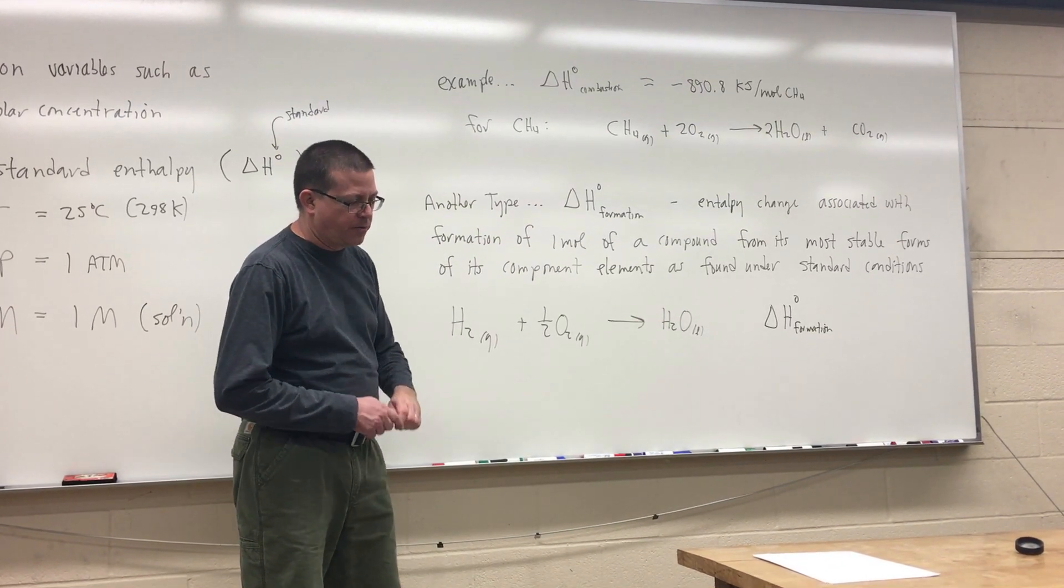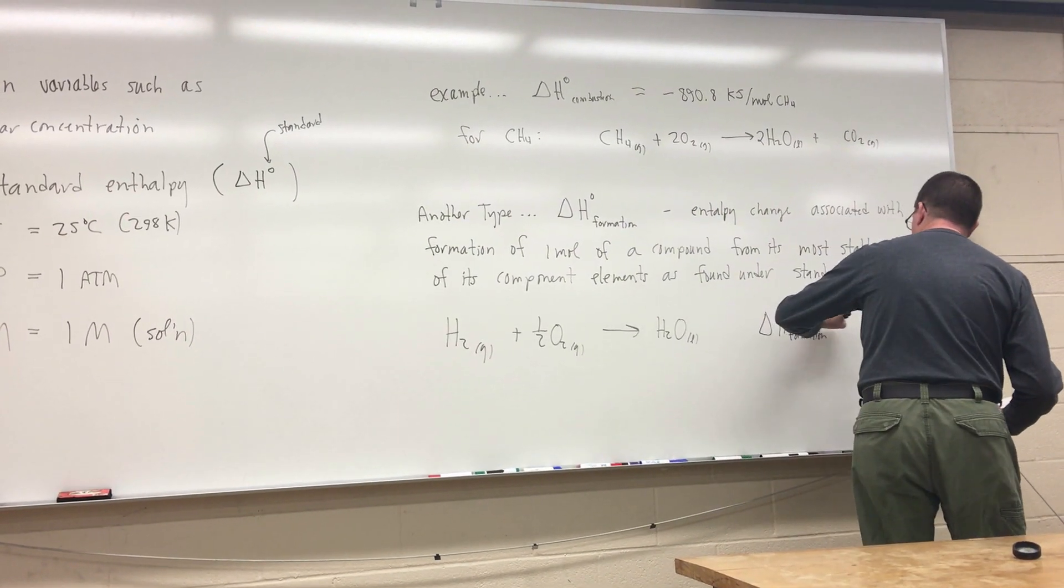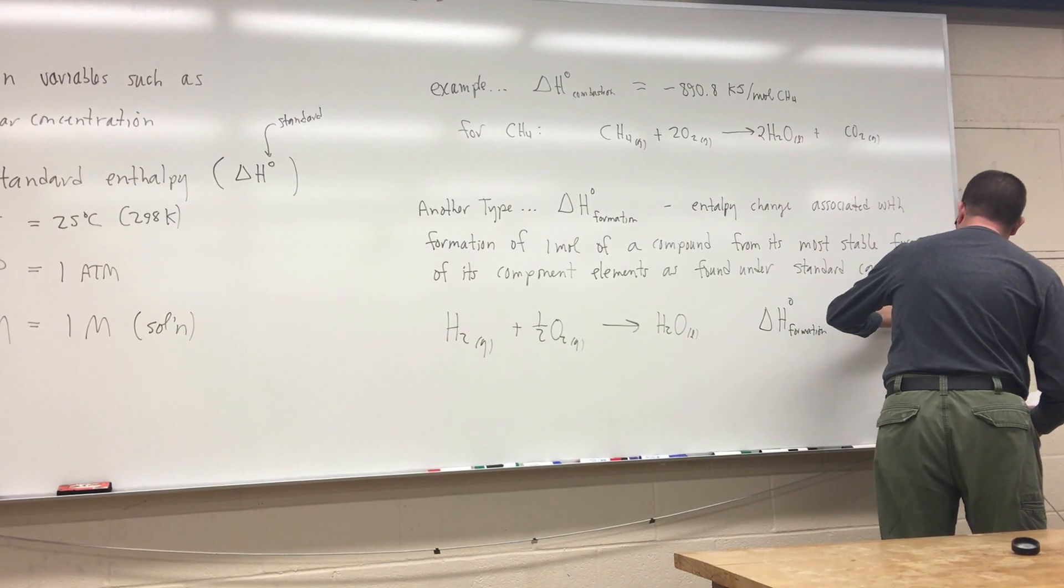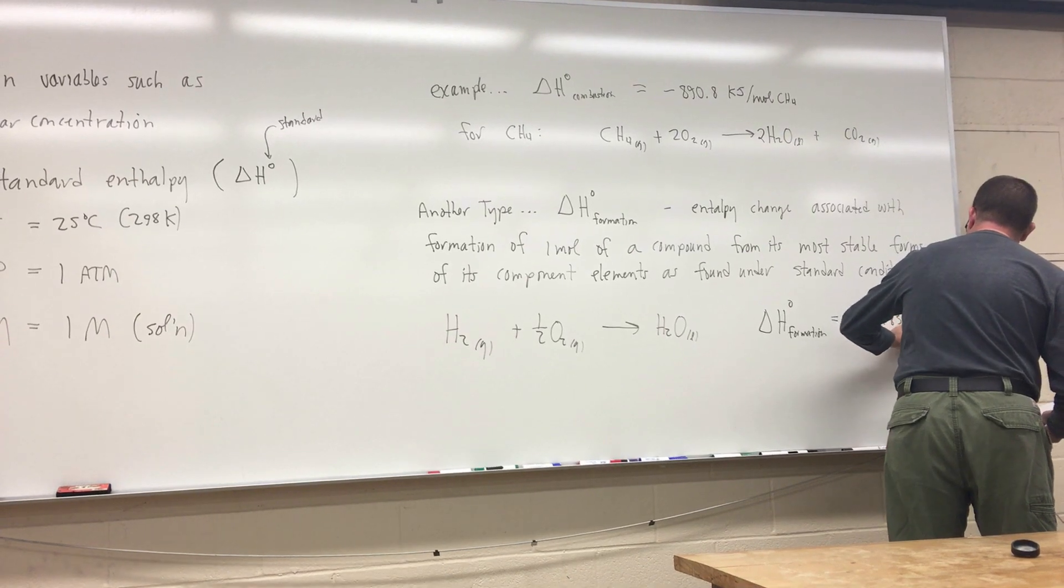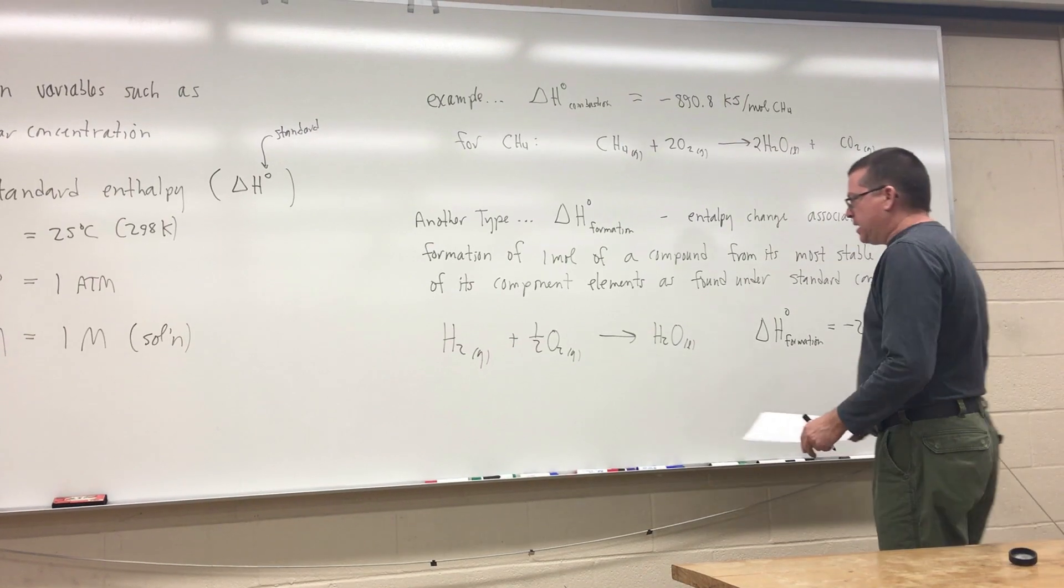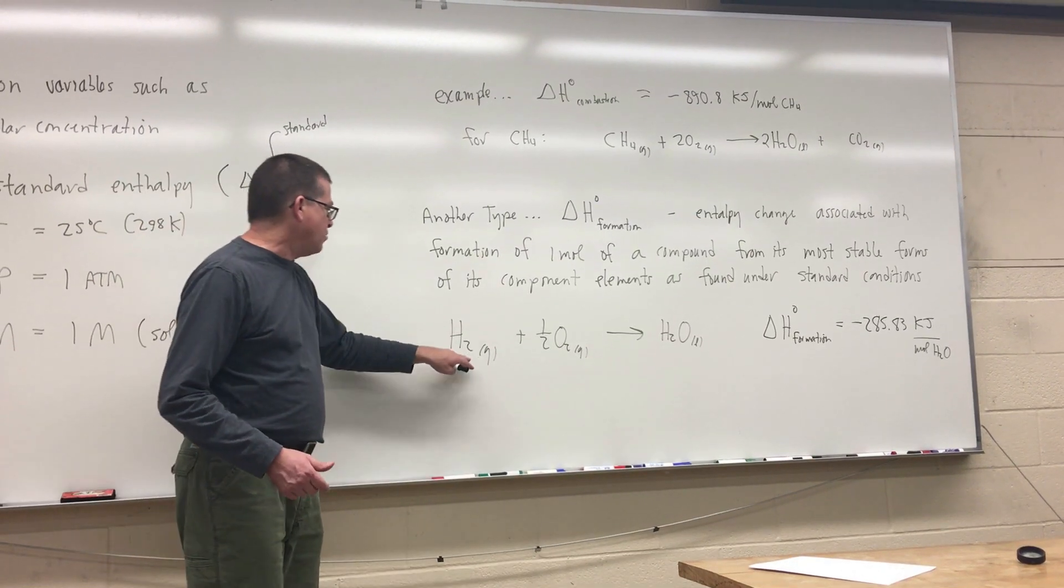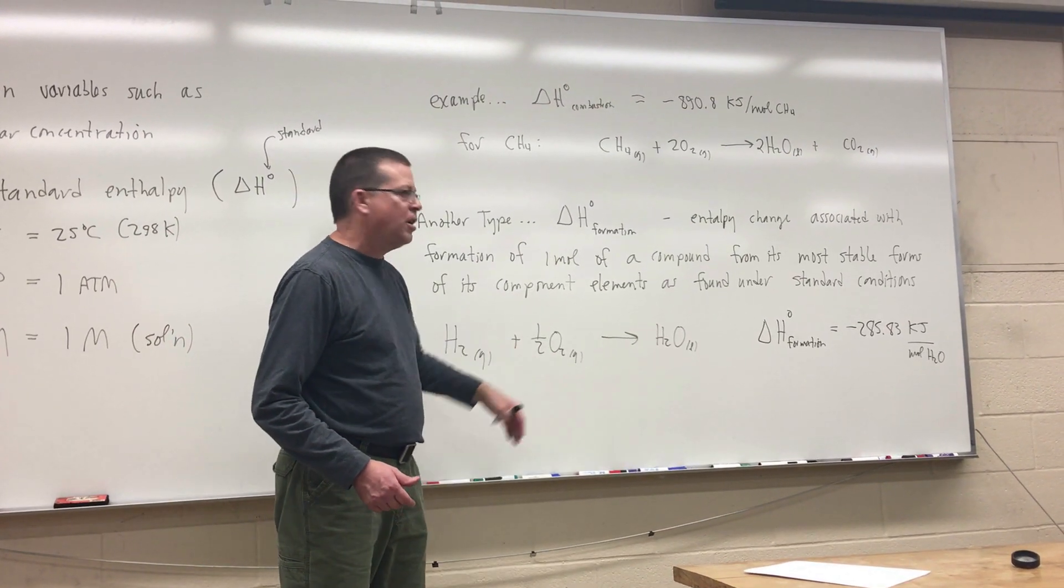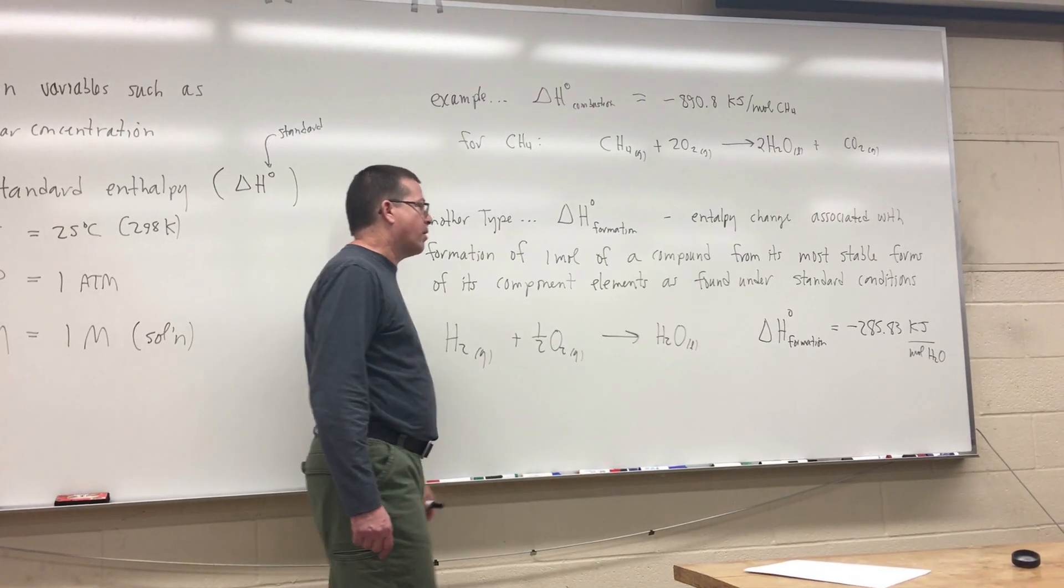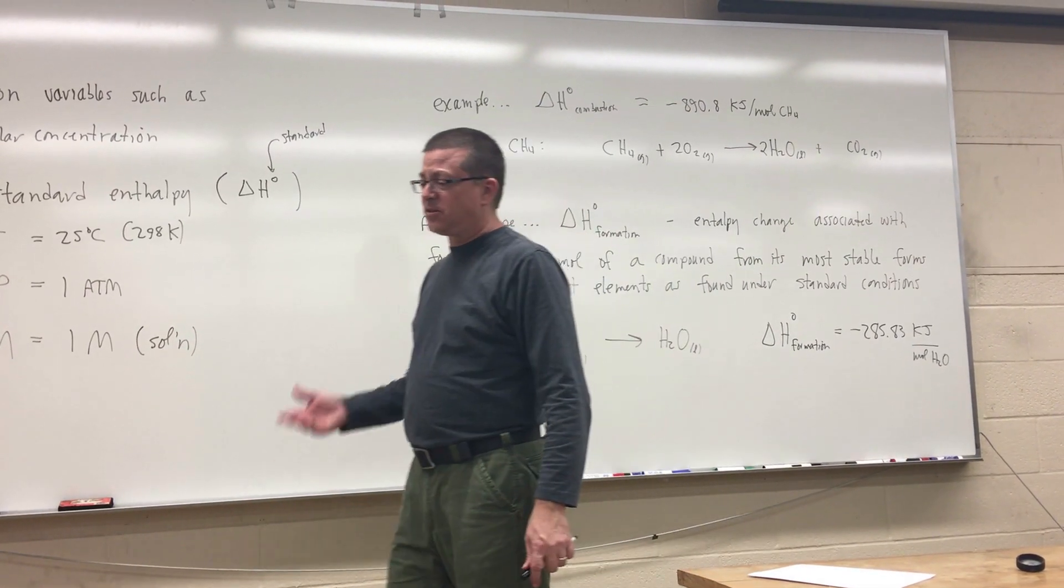Now this particular delta H of formation has a value that we can look up, and it turns out to be equal to minus 285.83, and that's going to be kilojoules per mole of water that I form. It makes sense when we think about this because this is kind of sort of like a combustion reaction, isn't it? It's hydrogen gas reacting with oxygen that's going to generate, of course, heat. It's an exothermic reaction to get my mole of liquid water, and that's going to be a negative sign in front because I know that's going to be an exothermic reaction.